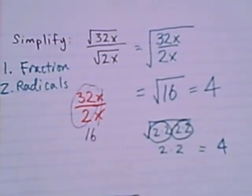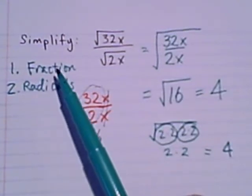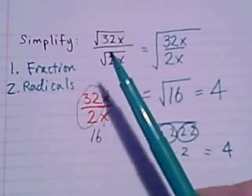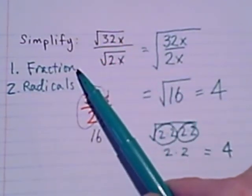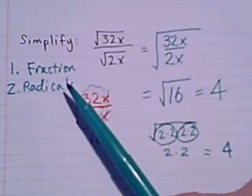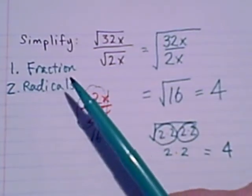So we're going to look at another couple of examples, but the main idea I'd like to convey to you is with problems like this, where we have radicals in a fraction, I like to think about simplifying the fraction part first, and once I've done that, I think about simplifying the radicals.